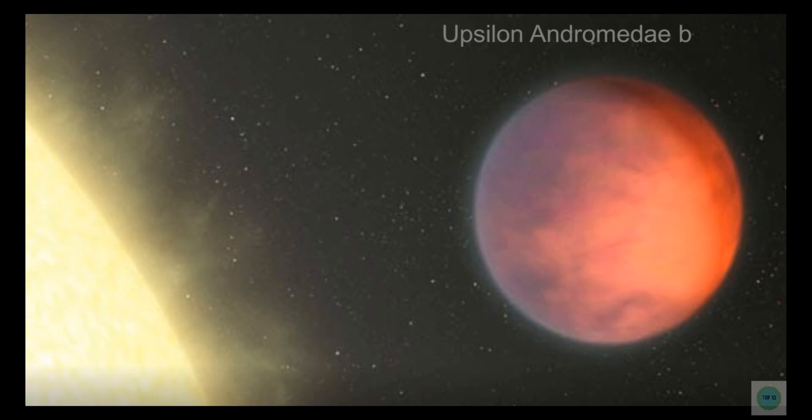Number 6 is Upsilon Andromeda B. Upsilon Andromeda B is one peculiar exoplanet that turns around the star Upsilon Andromeda A, which is 44 light-years from Earth. The exoplanet is excessively close to its sun, finishing a circle in 4.6 days. As you may have guessed, this suggests that it is tidally locked, with one side forever facing the sun and one incredibly hot side.